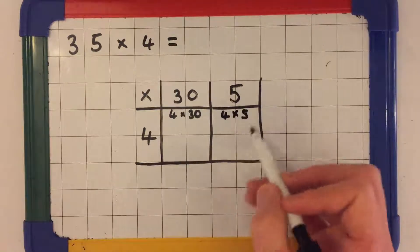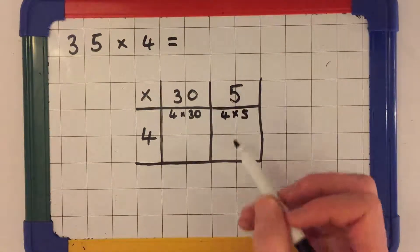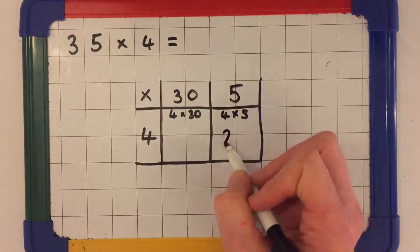I'm going to start off solving the one-digit multiplied by one-digit. 4 times 5 is 20.